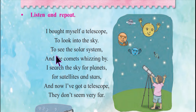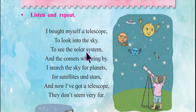He bought the telescope to see the solar system. What do you mean by the solar system? The solar system is a collection of eight planets and their moons in orbit around the sun, together with smaller bodies in the form of asteroids, meteoroids, and comets.